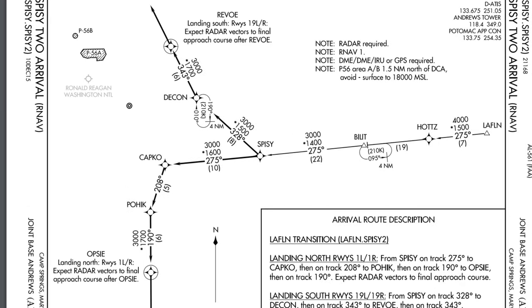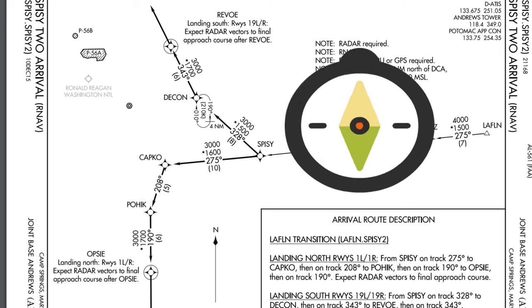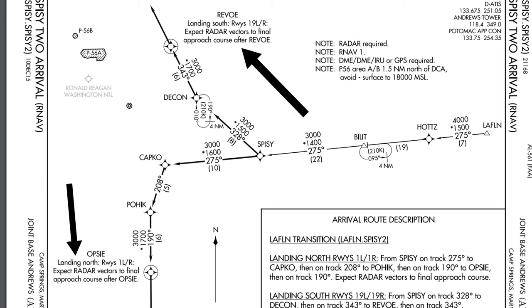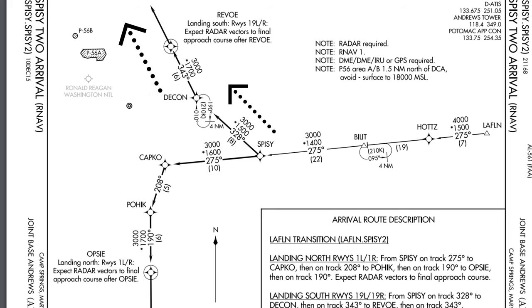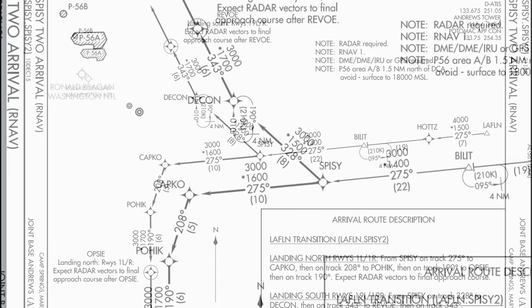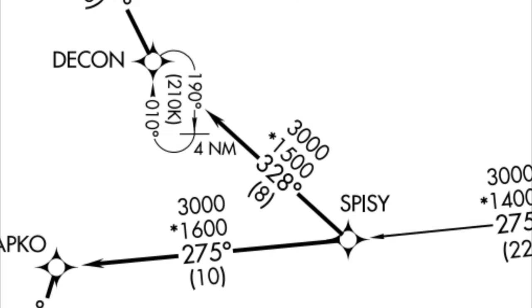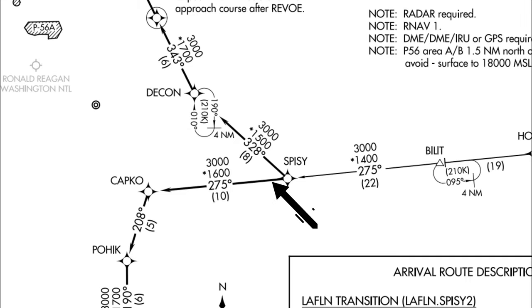Now that we've reached the Sipsy transition, we need to decide whether to go north or south depending on which runway we're landing at. If we're landing at runway 19 Left, we take the northerly direction. Between Sipsy and Decon the lowest safe altitude is 3,000 feet, with ground obstructions at about 1,500 feet, a course heading of 328 degrees, and a leg distance of 8 nautical miles.